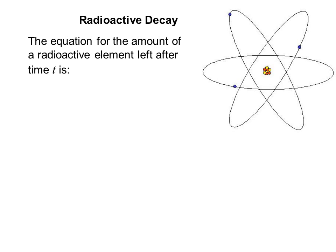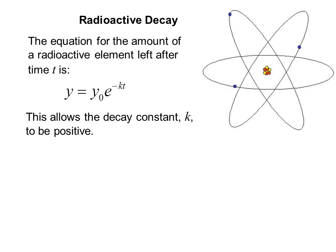Radioactive decay. And yes, I know this is not what an atom looks like, but it was the clipart I could find. The equation for the amount of a radioactive element left after time t is y equals y sub 0 e to the negative kt. This allows the decay constant k to be positive.